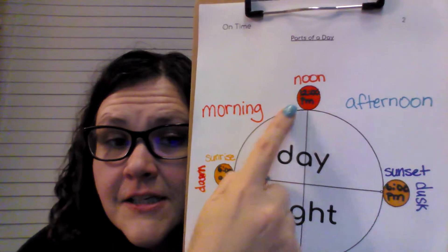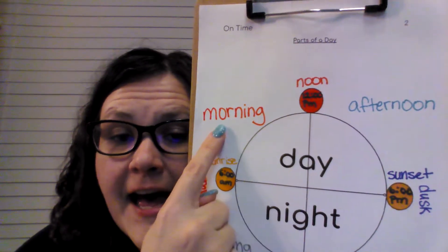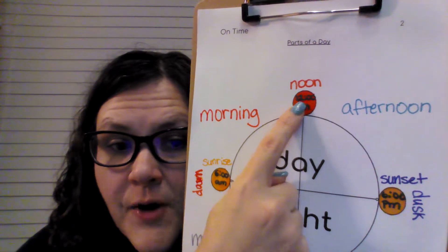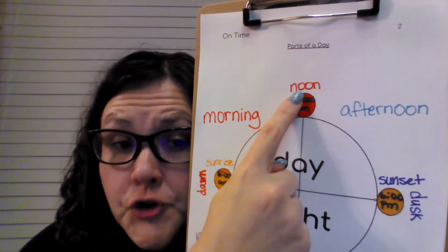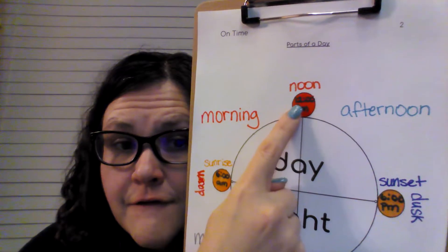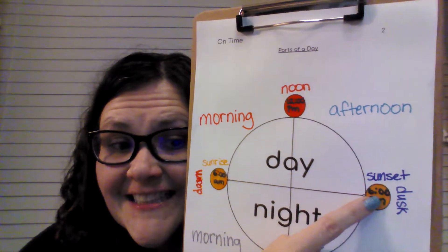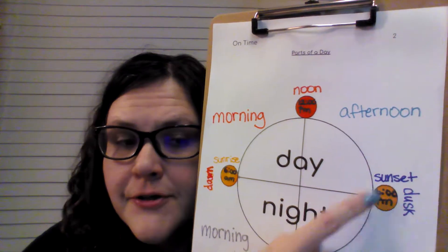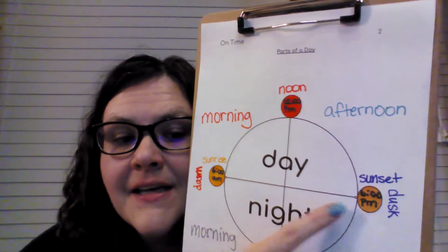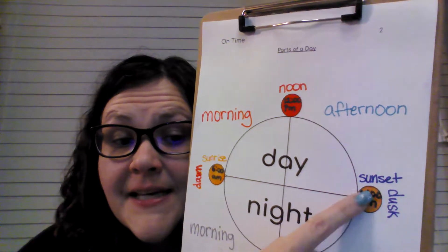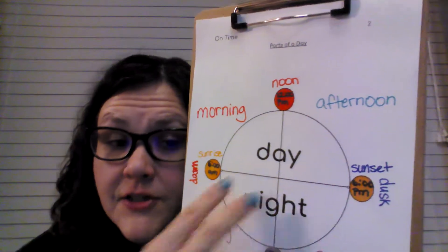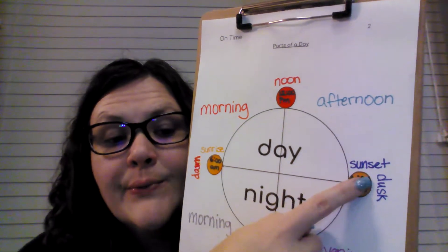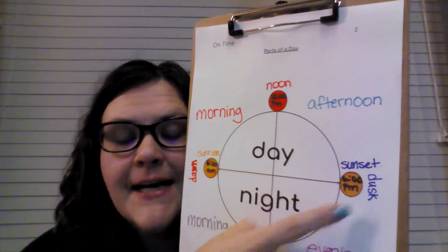From 6 to 12, we have morning. At 12 p.m., we have noon. From 12 to 6 p.m., or 1800 hours, we have afternoon. At 6 p.m., we have sunset — so the sun you can no longer see goes down.